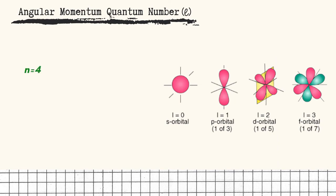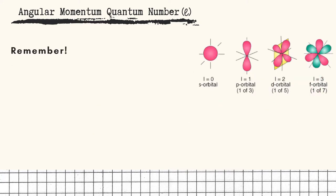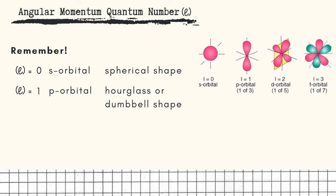Its value is related to the principal quantum number and has allowed value of 0 to N minus 1. For example, if we have 4 as the value of N, then the possible values of L would be 0, 1, 2, and 3. Remember class, if L is equal to 0, then the orbital is called S orbital and has a spherical shape. If L is equal to 1, the orbital is called P orbital and has an hourglass or dumbbell shape. If L is equal to 2, the orbital is called D orbital and has a cloverleaf shape. If L is equal to 3, the orbital is called F orbital and has a complex shape.